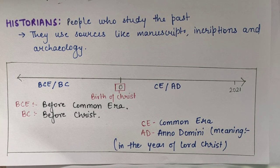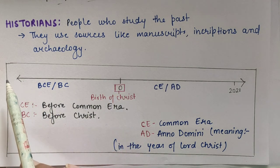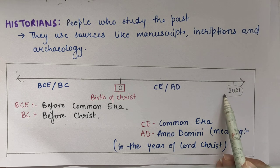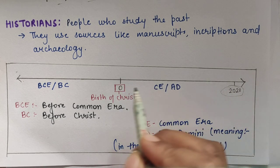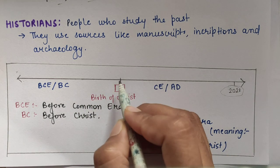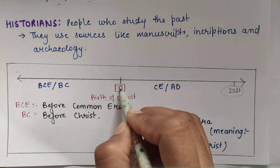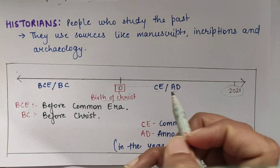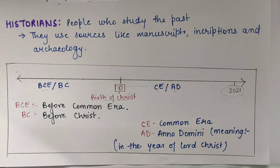Now, by this we end this chapter. The last thing is the timeline. Timeline mein years do parts mein divided hain. This is the middle — the birth of Christ, which is 0. On the right-hand side we say CE and AD, and on the left-hand side we say BCE and BC.